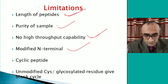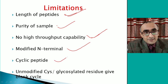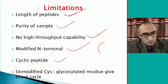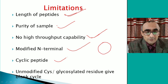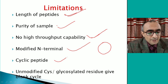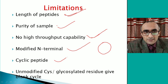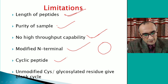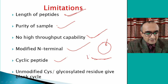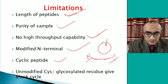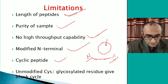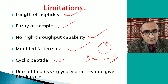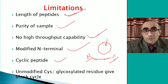PITC will not react with the N-terminal amino acid. Similarly, if you have cyclic peptides — circular peptides where the N- and C-terminal are joined through a peptide bond — there is no free N-terminal, so they also will not react with PITC. In such cases, cyclic peptides are first hydrolyzed to produce a free N-terminal, and then sequenced. Also, if you have unmodified cysteine or glycosylated residues in the peptide, you will get a blank cycle — those will not be recorded by the Edman degradation method.